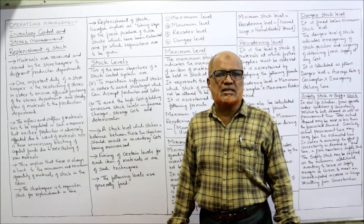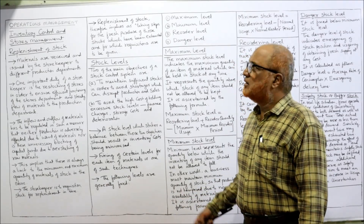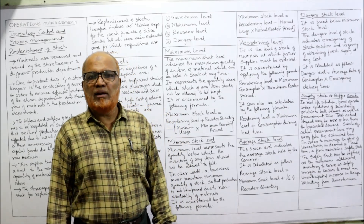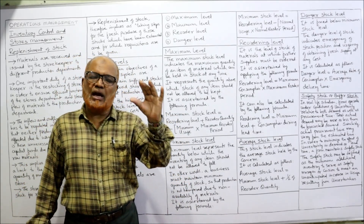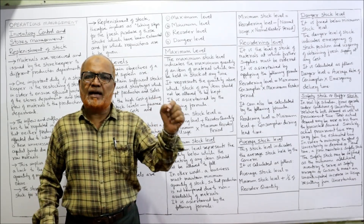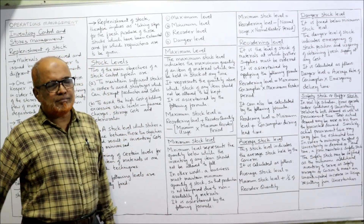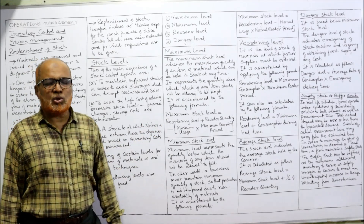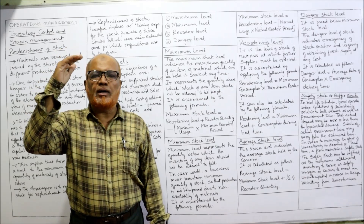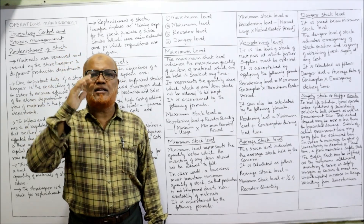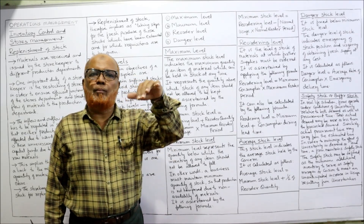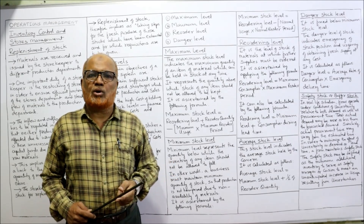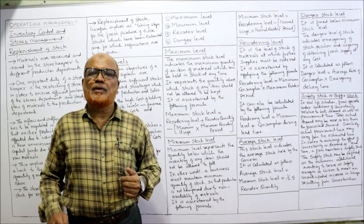The following levels are generally fixed: maximum level, minimum level, reorder level, average stock level, and danger level. These are written on the bin card hung on the racks for each item. The maximum stock level indicates the maximum quantity of an item of material which can be held in stock at any time. If inventory goes beyond this maximum level, it means there is overstocking, which leads to higher inventory cost.